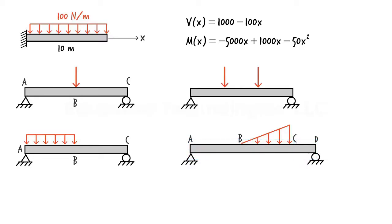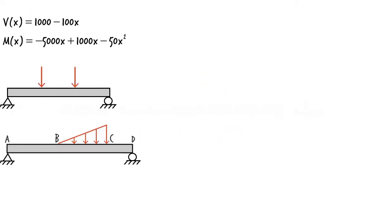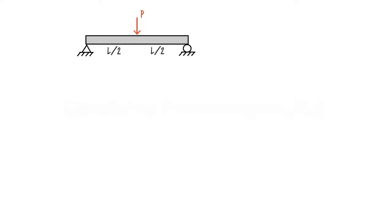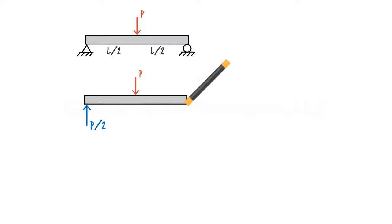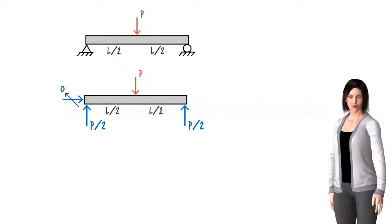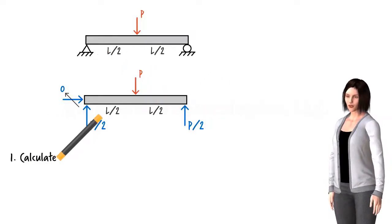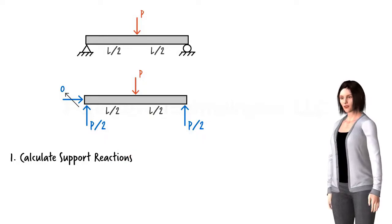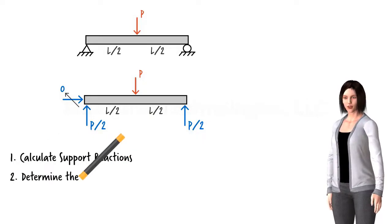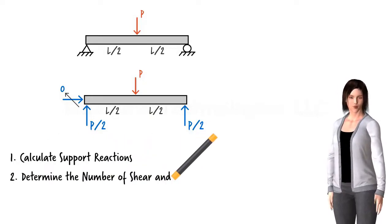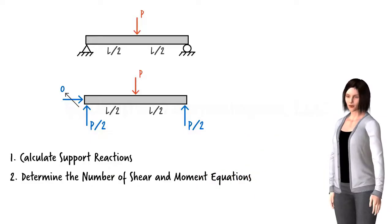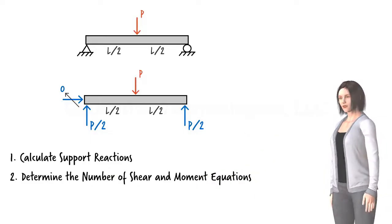Now that we know it may be necessary to have multiple equations for representing shear and moment in beams, let's talk about how to actually formulate such equations. Given a beam, we always start by calculating its support reactions. Step one is to calculate the reaction forces. Step two is to decide how many shear and moment equations we need — that is, how many segments the beam is divided into by the loads.